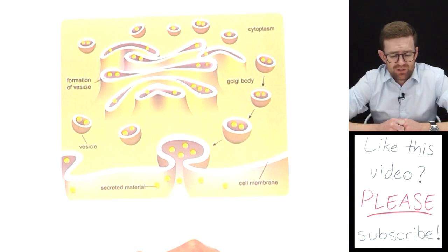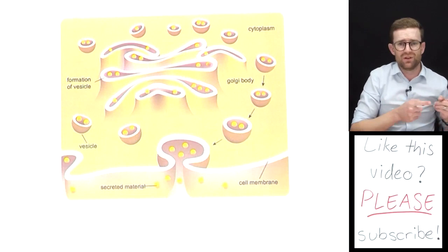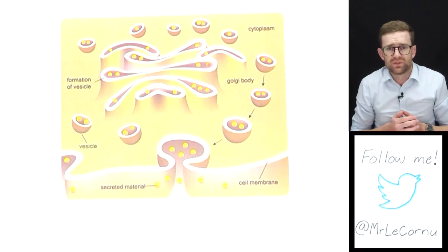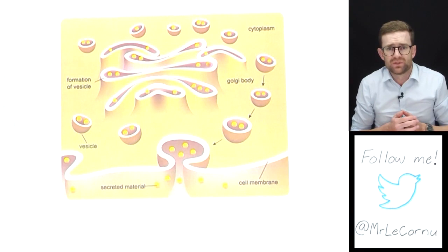So that's our process exocytosis. Remember it's the complete opposite of endocytosis. It's one of the active processes for substances moving out of cells, meaning of course that it requires energy. I hope this has helped you to understand it better. Thanks very much for watching and we'll see you next time.